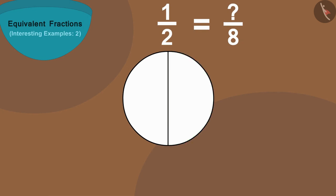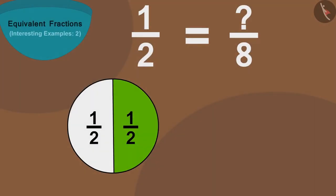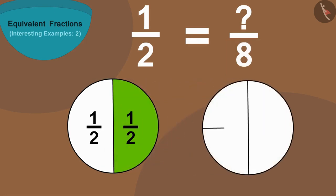Then, we can write the colored part of the circle in the form of a fraction in this way as 1 by 2. Now, in this fraction, the number 8 shows how many parts of something are made. In this way, we can make a similar circle and divide it into 8 equal parts.